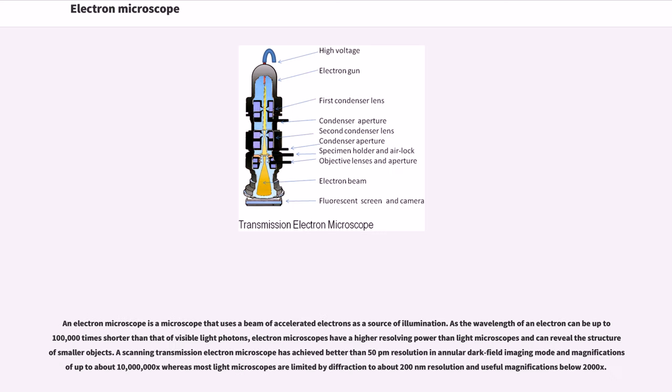Electron Microscope. An electron microscope is a microscope that uses a beam of accelerated electrons as a source of illumination. As the wavelength of an electron can be up to 100,000 times shorter than that of visible light photons,